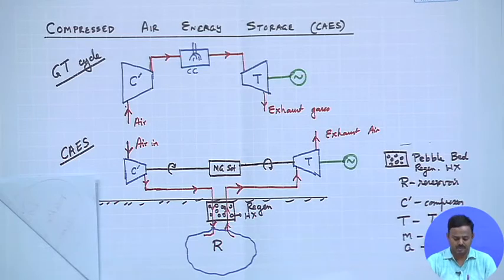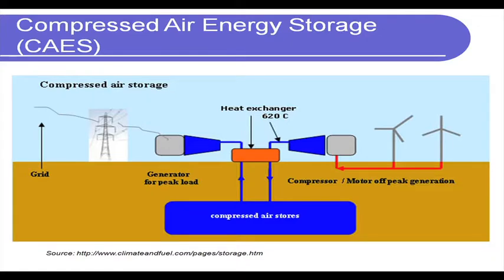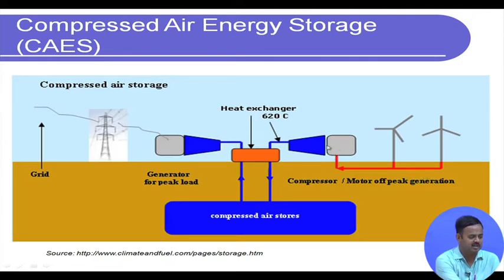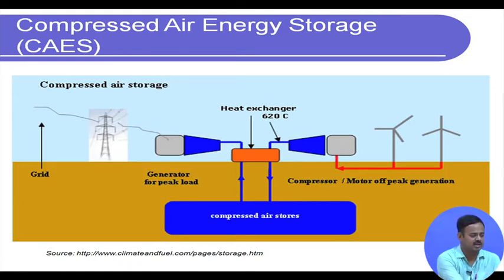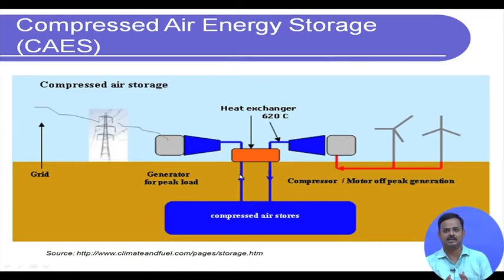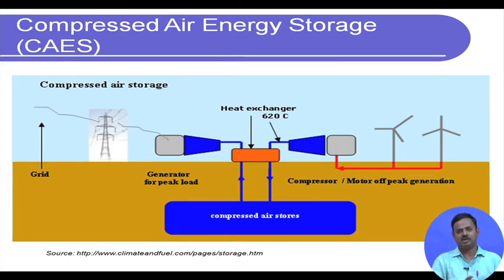To summarize the diagram: during off-peak hours, we have additional generation, so the compressor compresses the air and stores it. During peak hours, the compressed air is fed into a turbine which generates electricity. The heat exchanger must be regenerative because the flow from the compressor and the flow through the turbine do not happen simultaneously, so the heat must be stored and later passed on to the compressed air before it goes to the turbine.